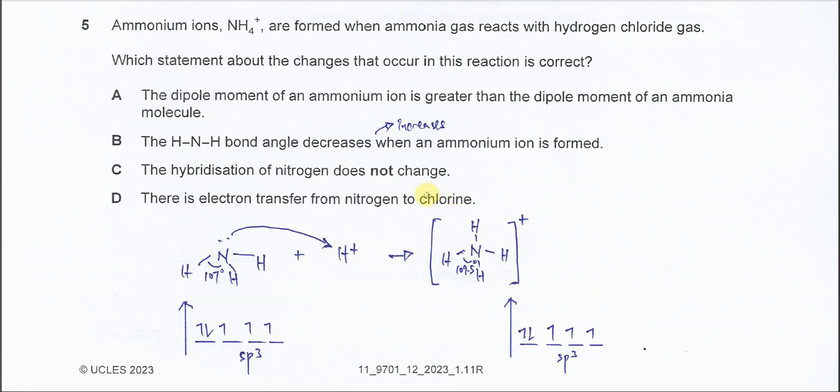Question 5. Ammonium ions are formed when ammonia gas reacts with hydrogen chloride gas. Which statement about the changes that occur in this reaction is correct?